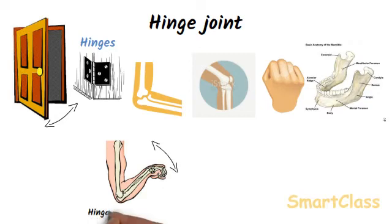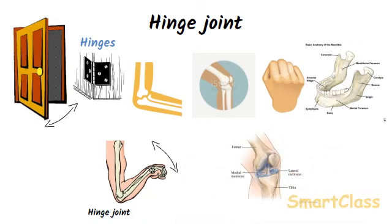The elbow can bend only forwards and backwards because it is a hinge joint. The lower end of the upper arm bone is in the shape of a knob and the upper end of the lower arm bone is in the shape of a cup — this knob and cup fit to form a hinge joint. Similarly, if we bend our leg at the knee, we can move it only forwards and backwards. The lower end of the upper leg bone is in the form of a knob and the upper end of the lower leg bone is in the form of a cup — this forms the hinge joint at the knee.